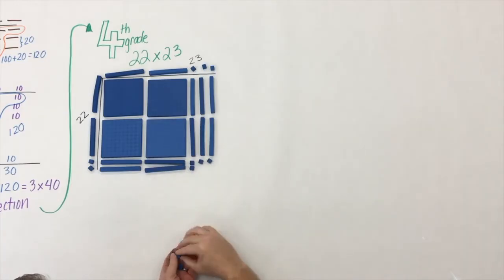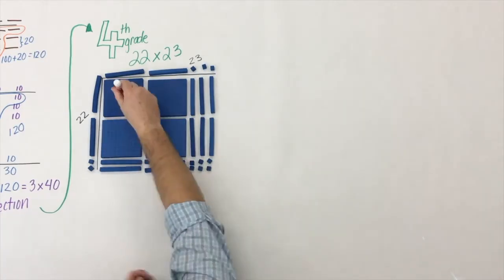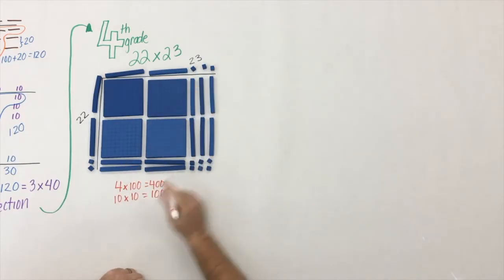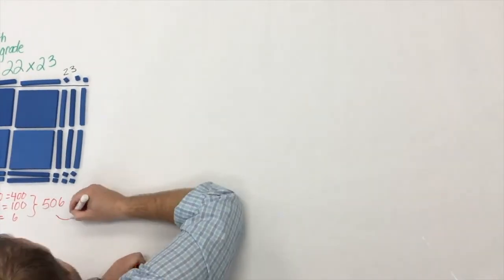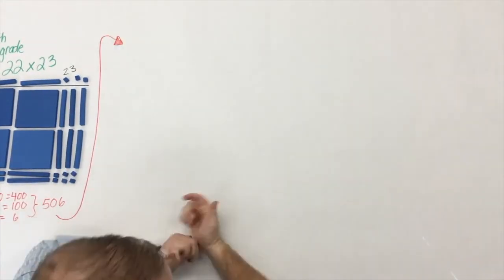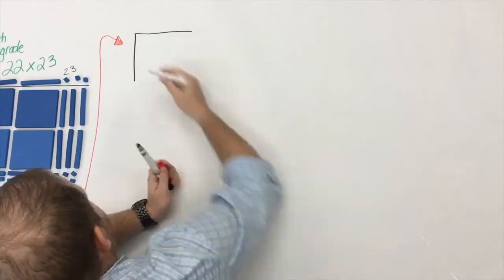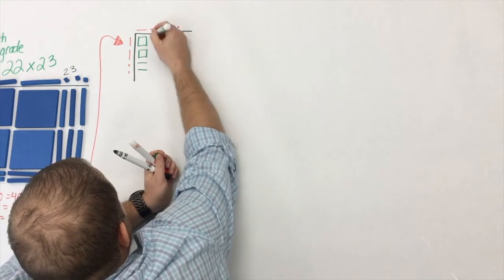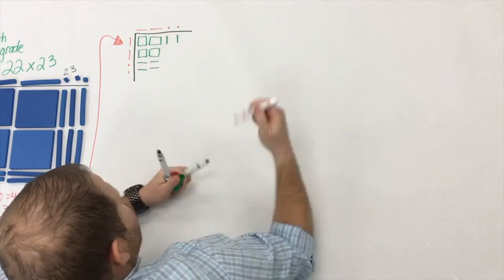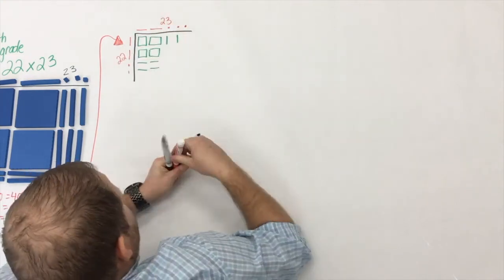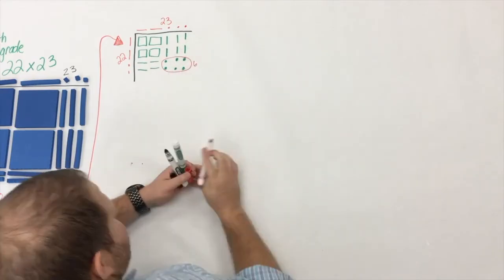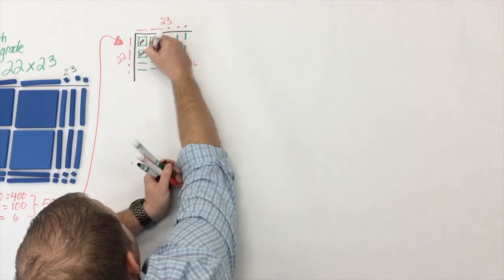Once students have built the model, they see they have four hundreds, ten tens, ten tens, and six ones — and they add that all together to get 506. Then, just like we did with smaller numbers, students draw a pictorial representation matching their concrete model. You can see the hundred plates, the ten-rods, and the six ones — all together, 506.